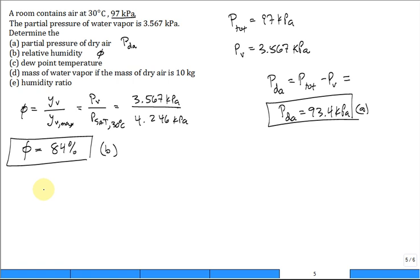The dew point temperature is when the saturation pressure at a given special temperature called the dew point temperature is equal to the current partial pressure of the vapor in the moist air mixture. Current partial pressure is equal to 3.567 kPa. So I'm looking for that temperature such that the saturation pressure is equal to that value.